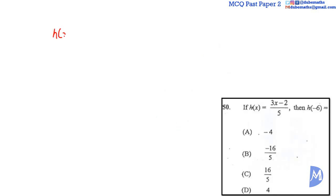Question 50. H of X is equal to 3x minus 2 over 5. H of negative 6 is equal to 3 of negative 6 minus 2 over 5, which is equal to 3 multiplied by negative 6 is negative 18, negative 18 minus 2 over 5.